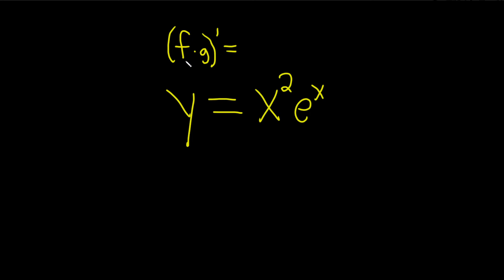You can think of f as your first function and g as your second function. So, this is the derivative of the first times the second plus the first times the derivative of the second. That's called the product rule.